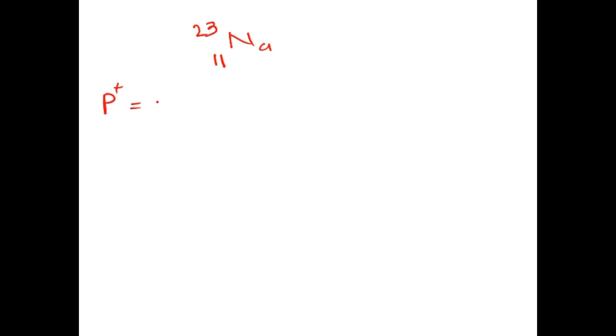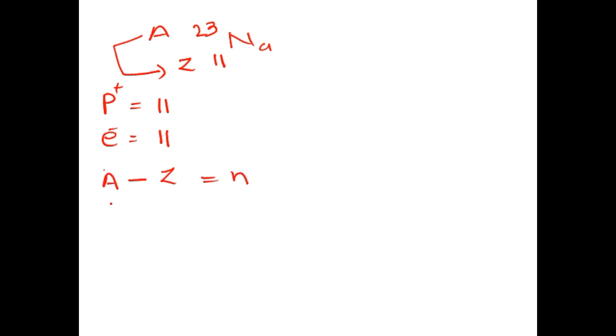Let's take another example: sodium. Sodium has an atomic number of 11 and an atomic mass of 23. So the number of protons is 11, and the number of electrons is also 11. For neutrons: A minus Z equals 23 minus 11, which equals 12. So sodium has 12 neutrons.